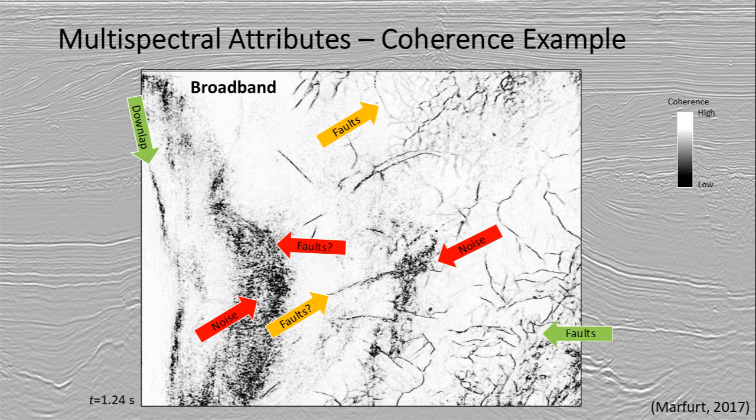At ASPE we've been finding it very useful to look beyond just the broadband attributes. Shown here we've got broadband coherency, and we start to separate out different spectral voices of the seismic.